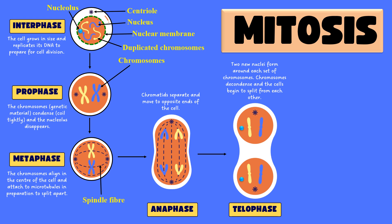In the next phase, telophase, the formation of two new cells begins. A new nuclear membrane forms around each set of chromosomes, and a new nucleus is also formed. In telophase, two new nuclei are formed across the chromosomes.